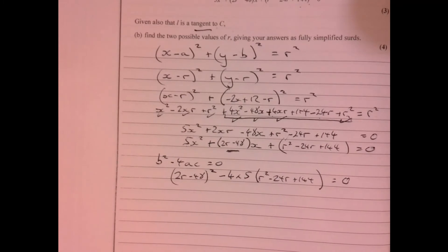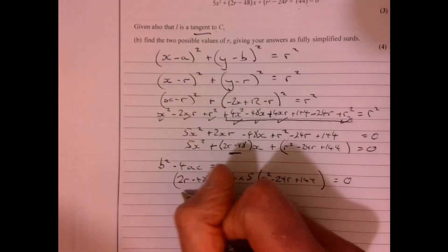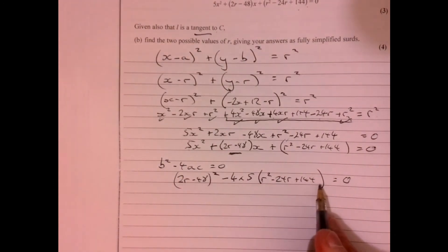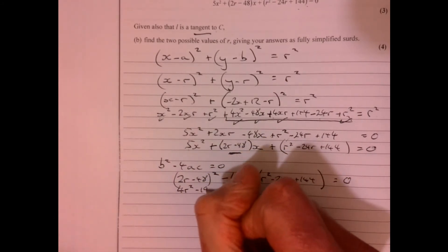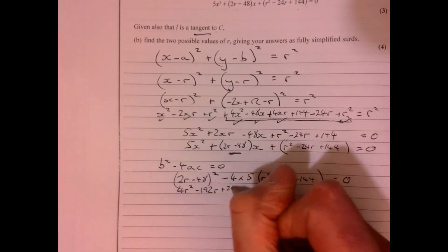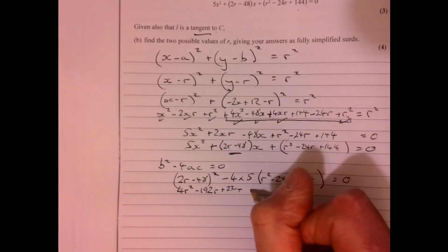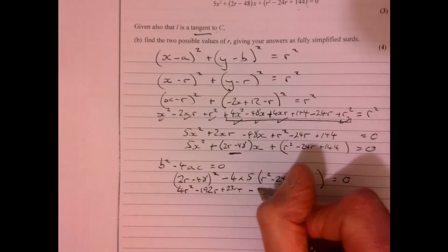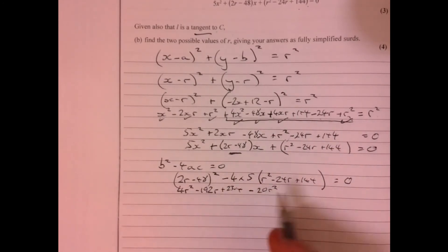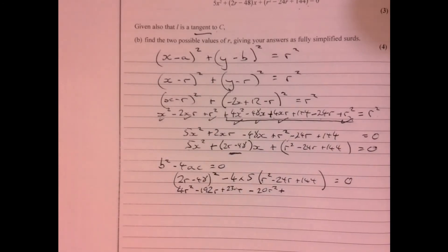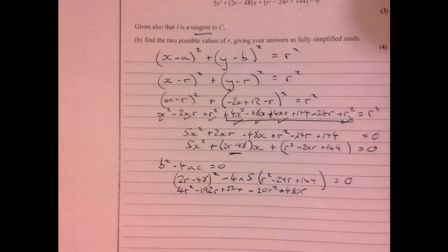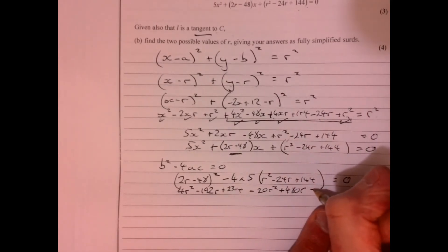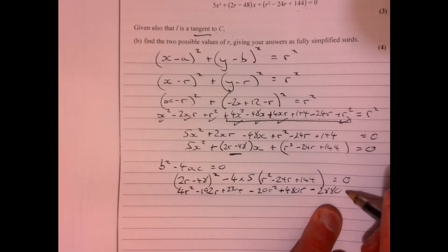Again, a little bit of multiplying out at this stage. So if we multiply all of this out, that's going to give us 4r² - 192r + 2304. And then we're going to get minus 20r², we're going to get a plus in there, plus 480r, and then we're going to get a minus at the end, minus 2880.